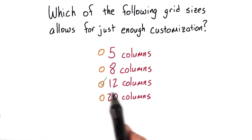This means that the correct answer is 12 columns. And in fact, most of the grid systems, if not all of the grid systems that you'll see today, use 12 columns.